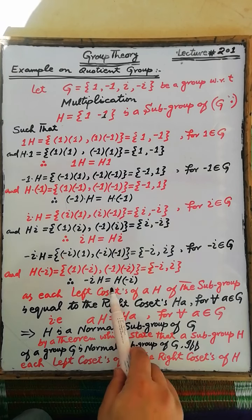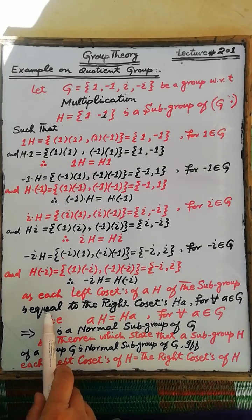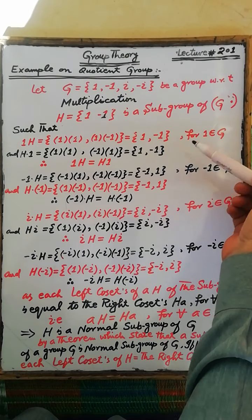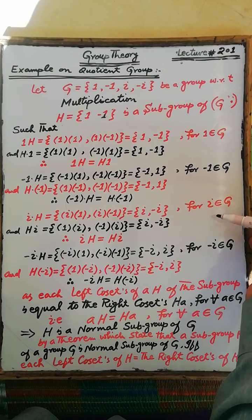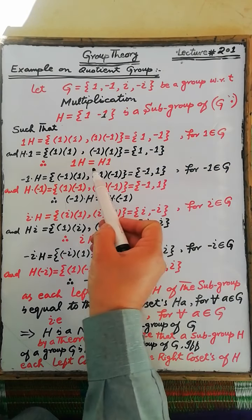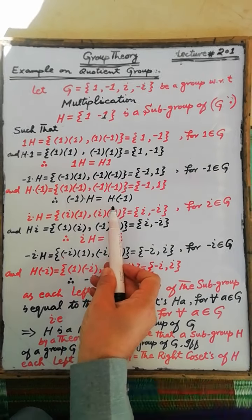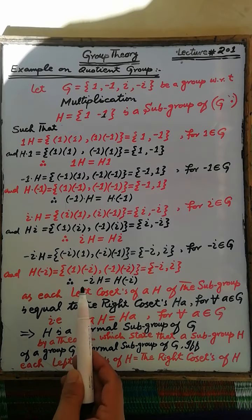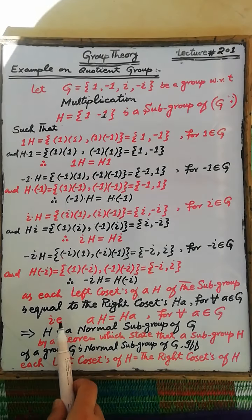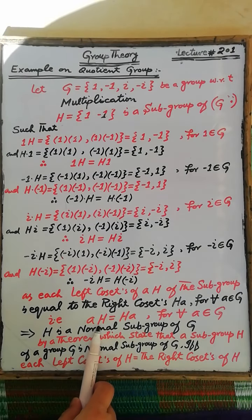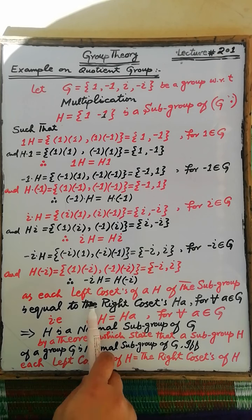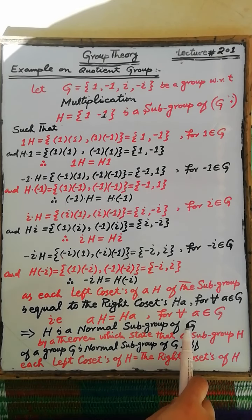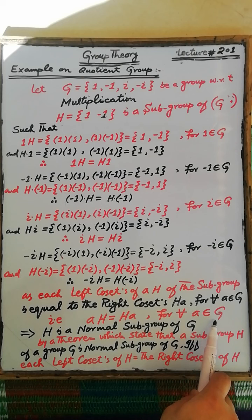Therefore, the left coset determined by the elements of the group G is equal to the right coset of the subgroup H of the group G. That is, the left coset AH is equal to the right coset HA for each A belonging to the group G.